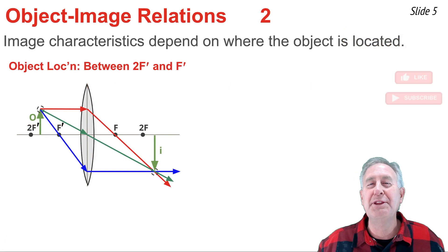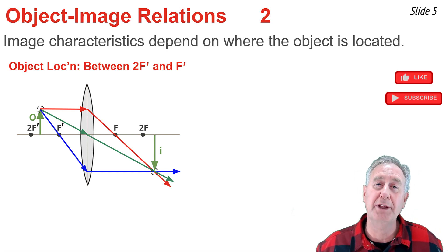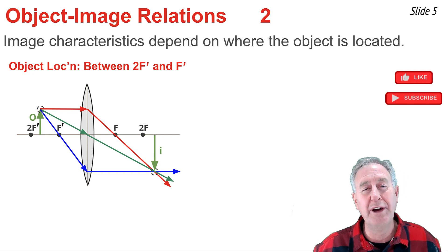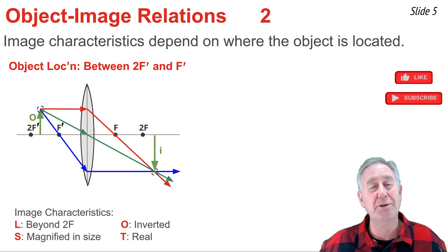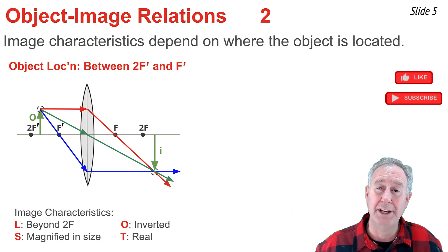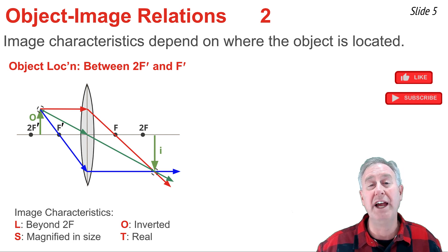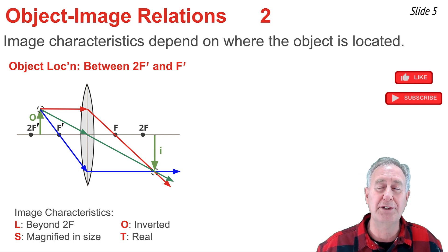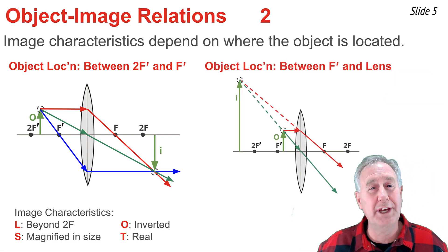Here we see the ray diagram for an object located more than one focal length and less than two focal lengths from the lens — between 2F prime and F prime. The image is the upside-down arrow located to the right of the 2F position; we describe that location as being beyond 2F. The image is inverted, clearly larger than the object arrow, so we describe the size as magnified. The type is real, since the refracted rays are converging to a point.